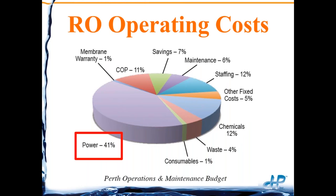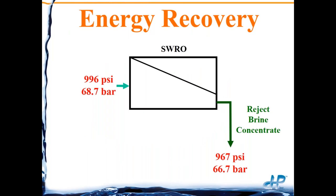As most of you are probably aware, power is the single biggest operating cost of an RO unit. So anything we can do to reduce power is going to reduce the life cycle cost of RO. If we look at a seawater RO system, it can be over 1,000 psi — over 70 bar — to force that water through the membrane. When you look at the concentrate, there's very little pressure drop. Energy recovery is where we recover the pressure and energy of the reject brine or concentrate stream, and use that energy to help pressurize the feed.